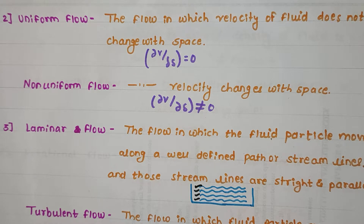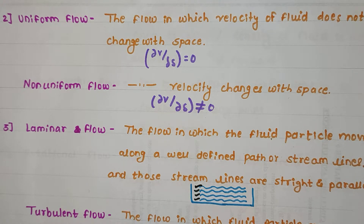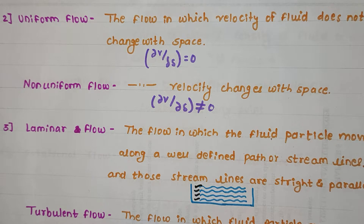The next type of flow is uniform flow. Uniform flow is the flow in which the velocity of the fluid does not change with space. The particle which has a specific velocity remains constant at any distance in the flow. We can represent it as ∂v/∂s = constant.